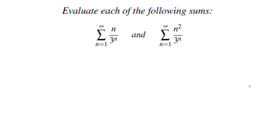Hello. In this video we're going to go over the evaluation of two sums. The first sum is the sum of n over 3 to the power of n, and the second sum is the sum of n squared over 3 to the power of n. We know how to evaluate these sums if we did not have the numerators — in other words, we know how to evaluate the sum of 1 over 3 to the power of n. So we're going to start with that.